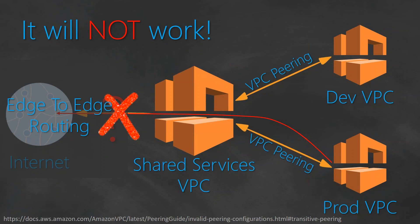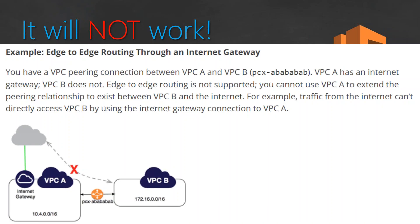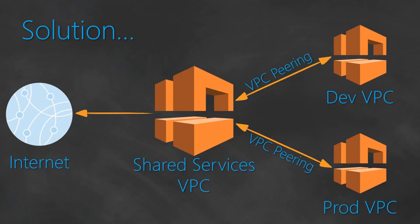Amazon has written a nice article about it, listing all the invalid peering connections that can happen in real-life scenarios. In our use case, this scenario is described broadly as edge-to-edge routing through an internet gateway. They state that VPC B will not be able to send traffic to the internet through VPC A. So what is the solution for this problem?